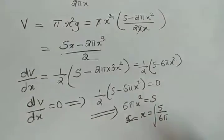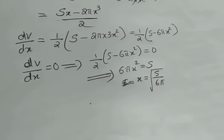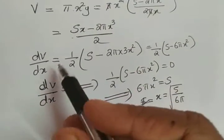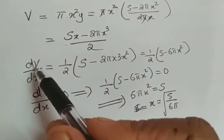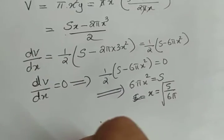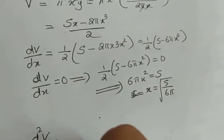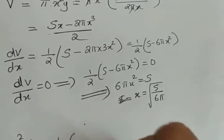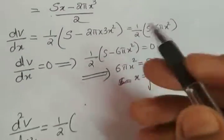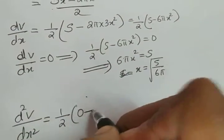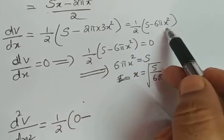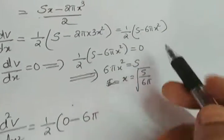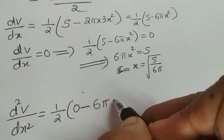Therefore x = √(s/6π). Now we apply the second derivative test by differentiating dv/dx again. d²v/dx² = (1/2)(0 − 6π · 2x) = −6πx.